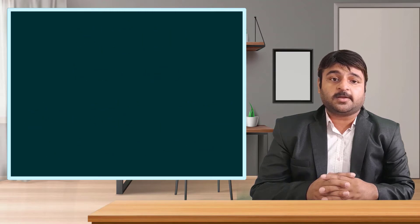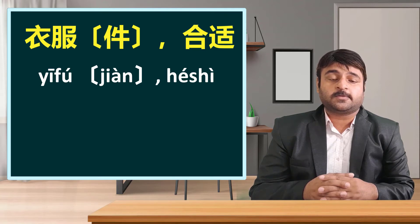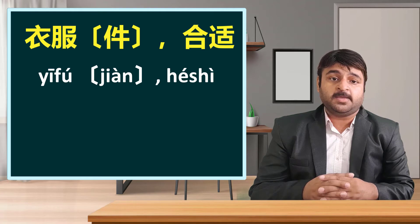Moving on to the next set of words: 'clothes' is the major word, and 'suitable' is the adjective. These clothes are better suited than those clothes, or in Chinese: these clothes compared to those clothes are more suitable. A 比 B — more suitable.